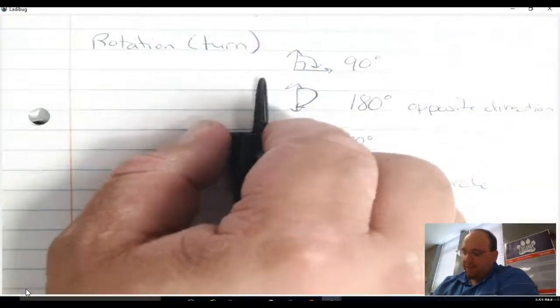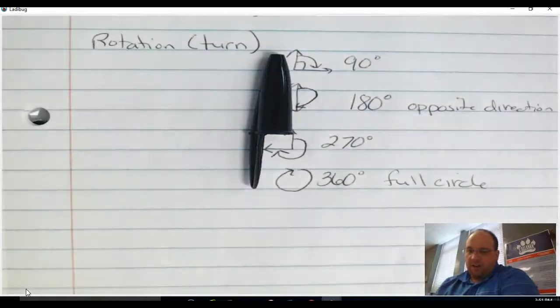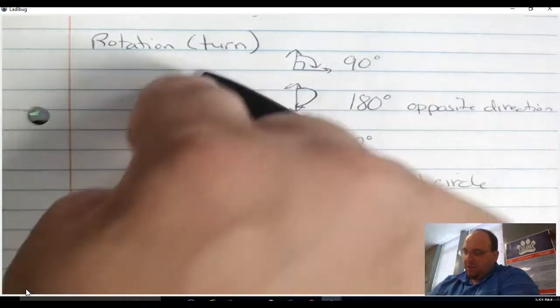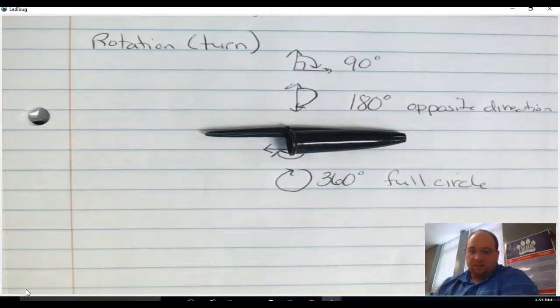If I go back to the start and I turn it like this, that's a 180-degree rotation. I go back to my start and I turn it all the way around to there, that's a 270-degree rotation.